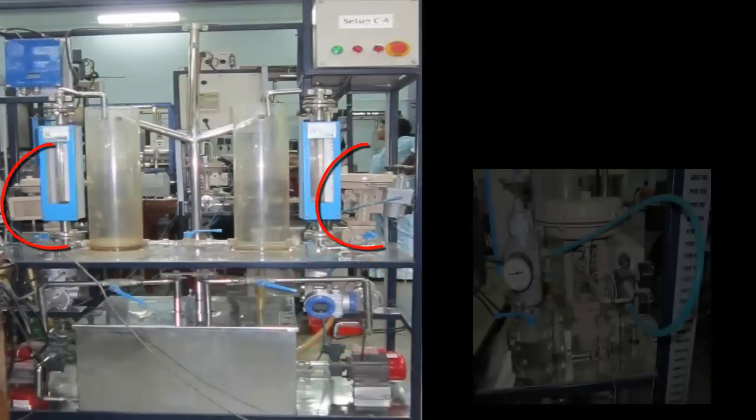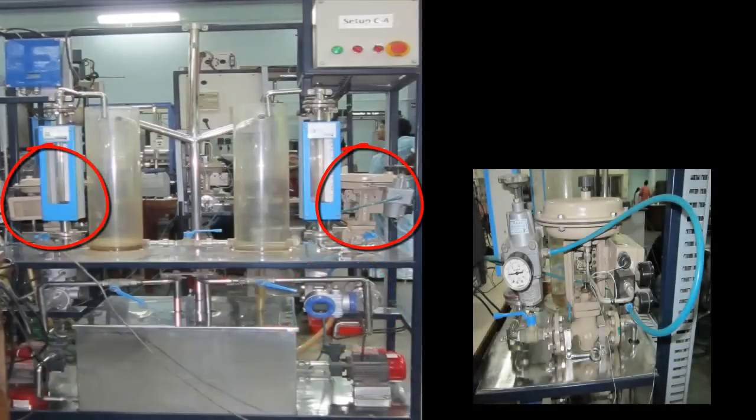On the right and left side behind the flow meters are the pneumatic control valves which control the flow of water into the tanks.